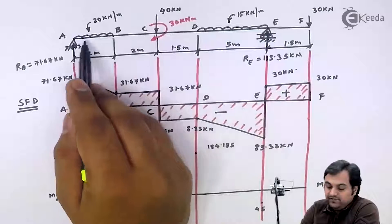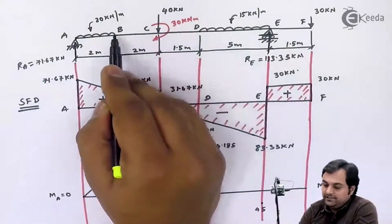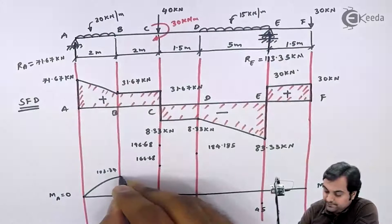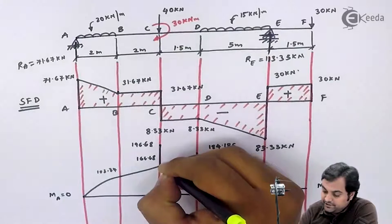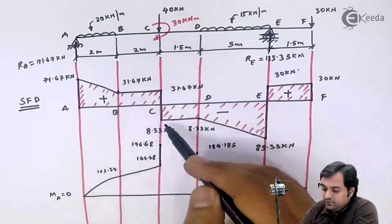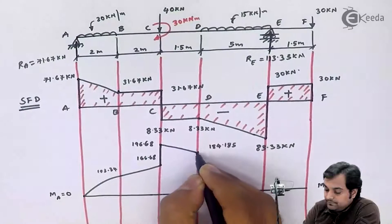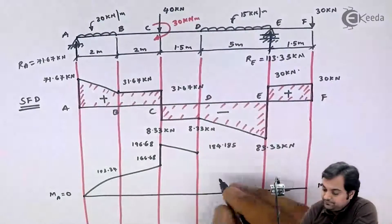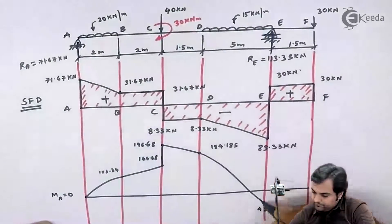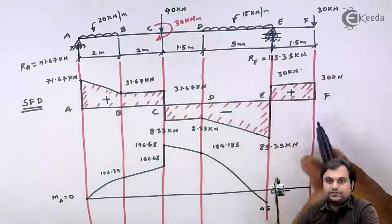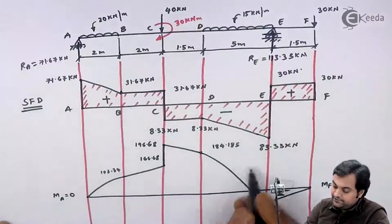From A to B there is a UDL, so the shear force was an inclined line, meaning the bending moment should be a parabolic curve. Between B to C there is no load, so bending moment is an inclined line. The bending moment increases from 166.68 to 196.68 at point C due to the external moment. From C to D there is no load so it is an inclined line. Between D to E there is a UDL and shear force changes sign, so we get a parabolic curve. Between E to F there is no load so bending moment is an inclined line.